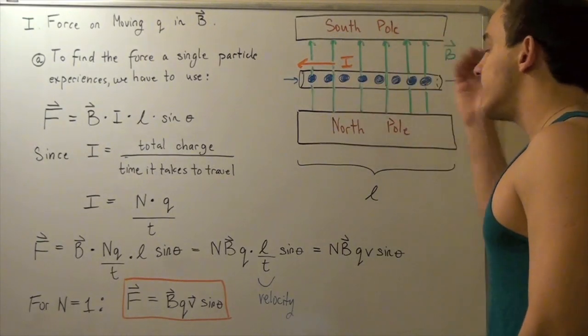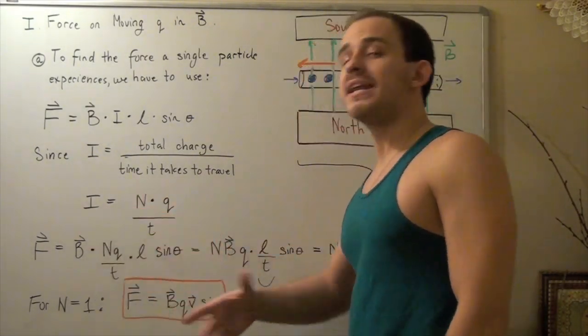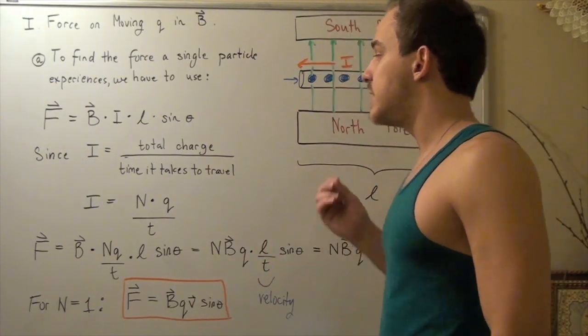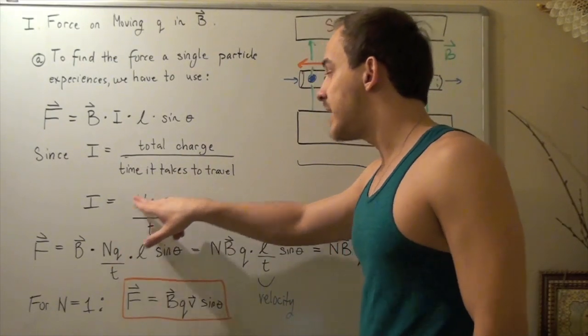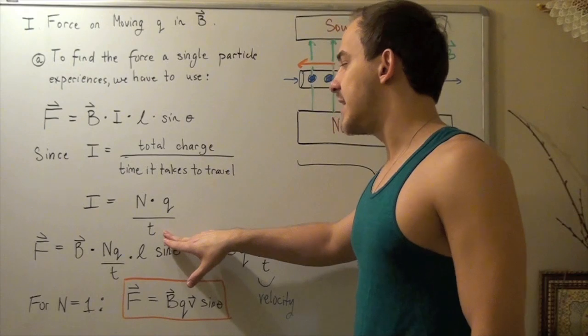Remember, in this case, we had eight electrons. And that means our N should be eight. But I want to find a general form for any amount of charge. So that means my current is equal to N times Q, my total charge, divided by the time it takes to travel.